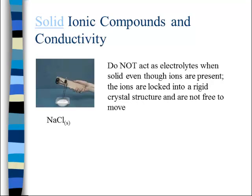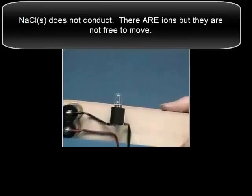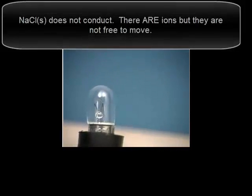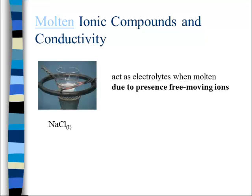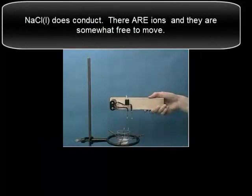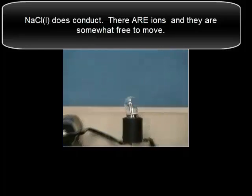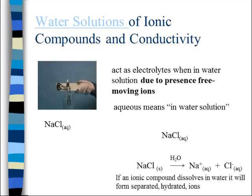Now let's look at some other substances. How about the conductivity of table salt? Table salt as a solid has no free-moving ions. Table salt molten — pure table salt heated so hot that the ionic substance finally melted. What about the conductivity of table salt dissolved in water? NaCl(aq) — when ionic substances like table salt dissolve in water, they dissociate into their ions.